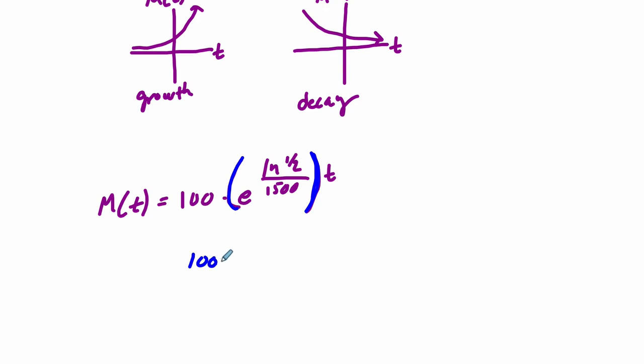Why is it growth? Because this thing is positive and greater than 1. If this number, though, is a half, or something between 0 and 1, then it's decay. So growth versus decay.